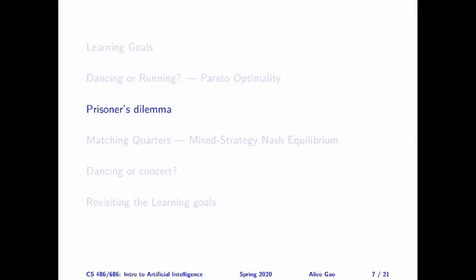Prisoner's Dilemma is one of the most well-known games in game theory. The interesting thing about this game is that if the two prisoners are able to communicate, then they can achieve the best outcome for both of them. But if they're not able to communicate, and if they act purely out of self-interest — that means they act to pursue their own goals, to maximize their own utility — then it turns out they are going to achieve the worst outcome of all possibilities.